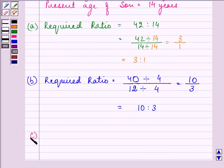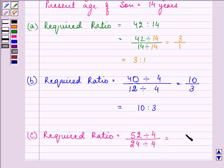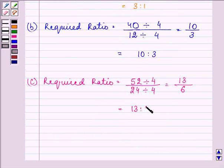Proceeding on with the C part. Here, we need to find out the required ratio age of father after 10 years. So, after 10 years, right now, he is 42 years old. So, after 10 years, he will be 52. The son will also be 24. That is 14 plus 10 dividing them by their HCF and the HCF is again 4. So, we have 13 by 6. That is 13 is to 6.